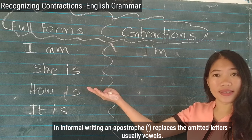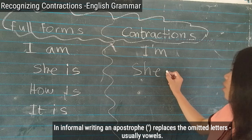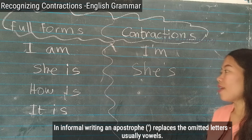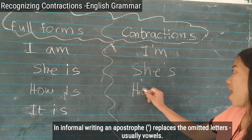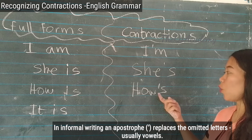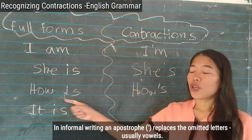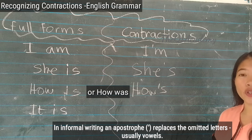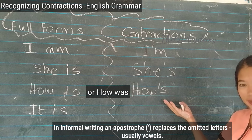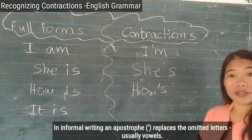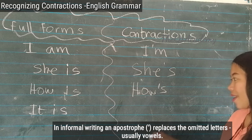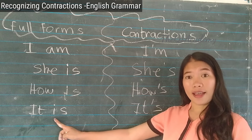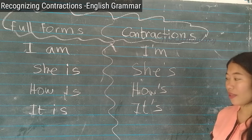How about 'she is'? The contraction is 'she's' — apostrophe S, omitting the 'i'. How about 'how is' or 'how was'? That becomes 'how's' — when you omit the 'i', you replace it with an apostrophe. And 'it is' becomes 'it's' — omit the letter 'i' and replace it with the apostrophe.